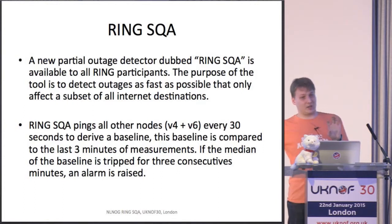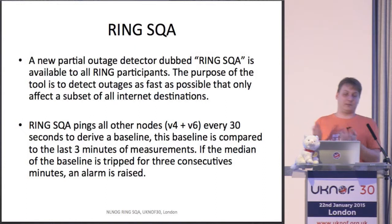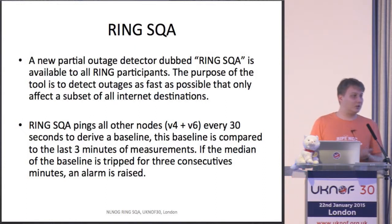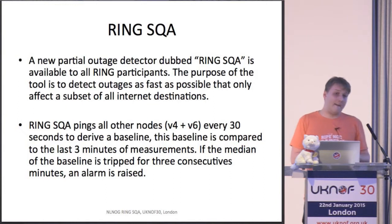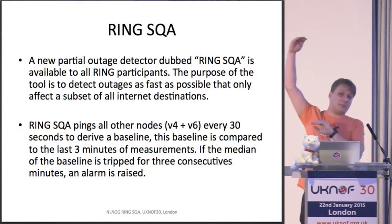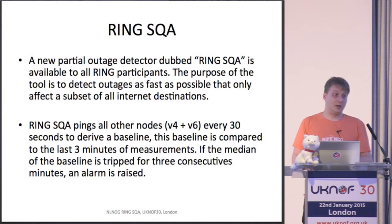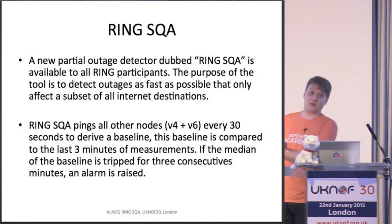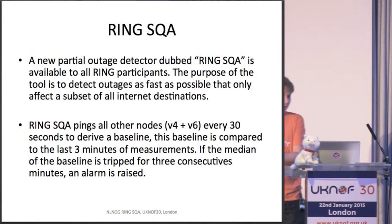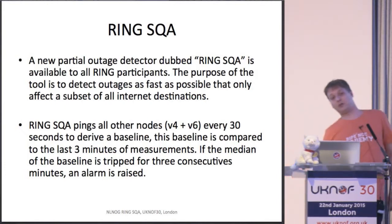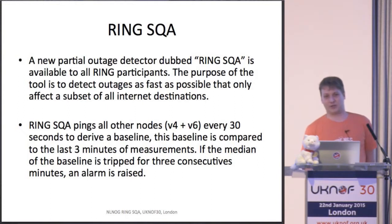So this baseline is derived: at any given moment, from any node to any other node, maybe 30 nodes are unreachable. But if that number suddenly spikes and 70 nodes become unreachable, then something interesting is going on. It's not interesting if 300 nodes become unreachable, because then everything is obviously broken. But it's the small brokenness that we want to get alerting on.